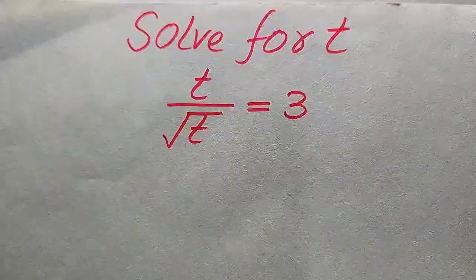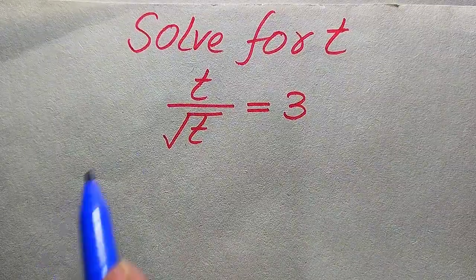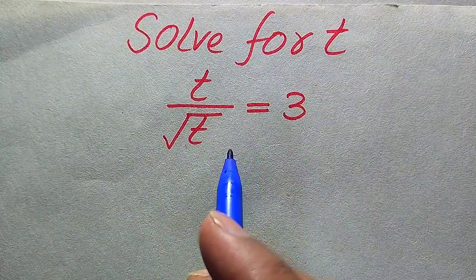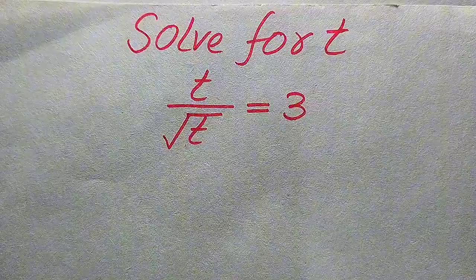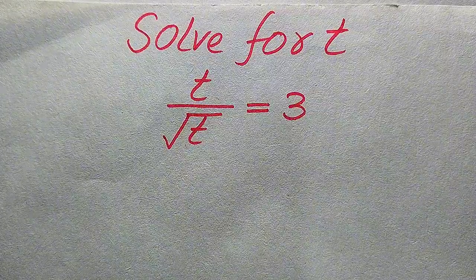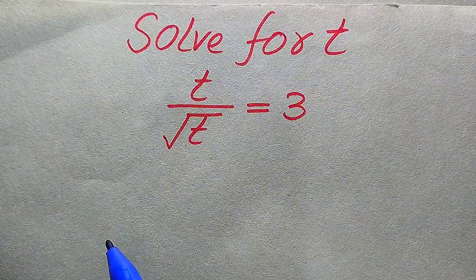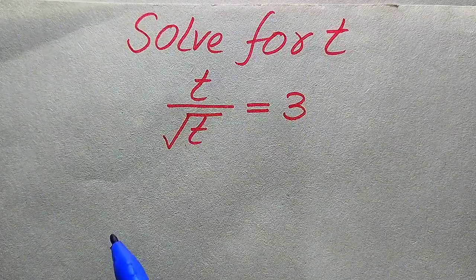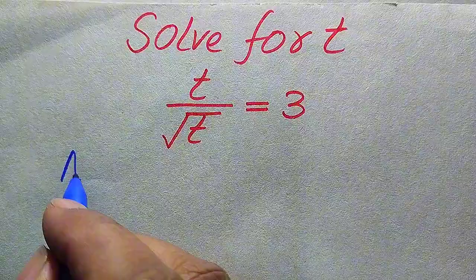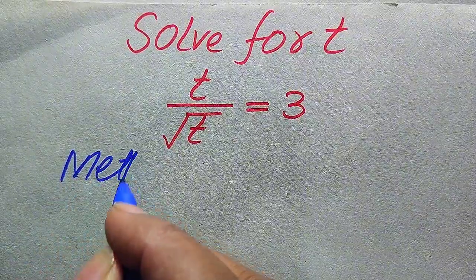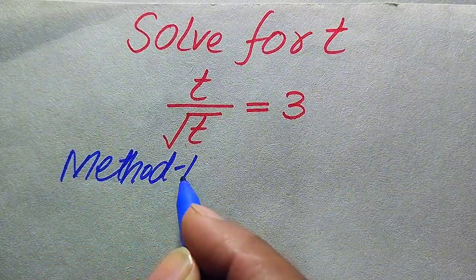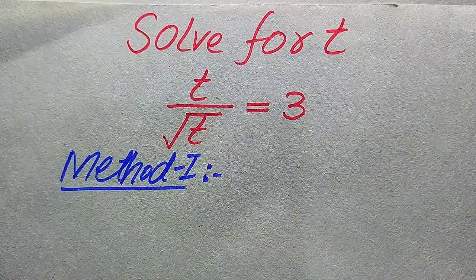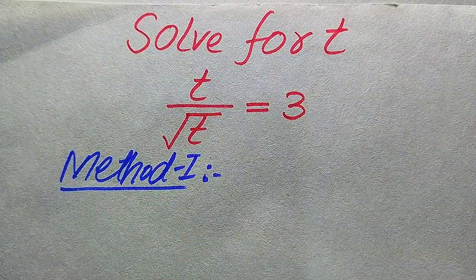Hello everyone, welcome. We solve this nice math olympiad algebra problem: t divided by square root of t equals 3. We solve this problem for all values of t — finding all roots, then verifying which roots are solutions and which are extraneous roots. We will solve this problem using two methods.